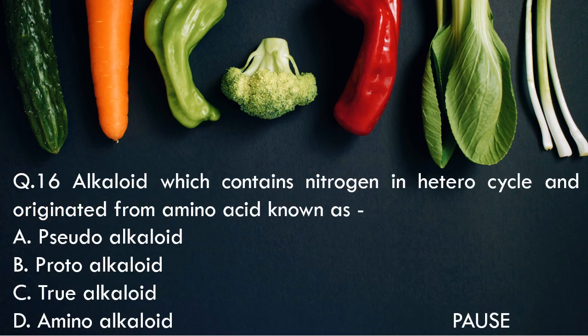Question 16: An alkaloid which contains nitrogen in a heterocycle and originated from an amino acid is known as — option A, Pseudo alkaloid. Option B, Proto alkaloid. Option C, True alkaloid. And option D, Amino alkaloid. And the right answer is True alkaloid.